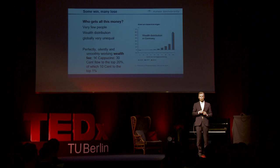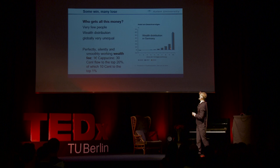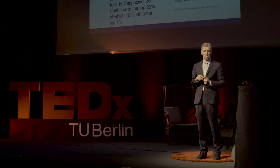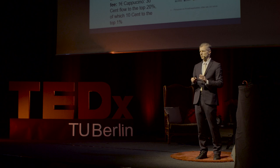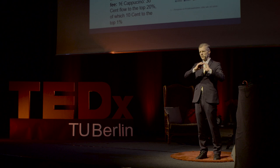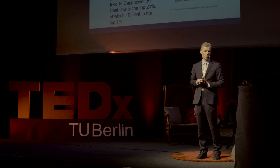Where does all this money go? Well, it's very simple: to the capital owners. Capital and wealth is distributed worldwide in a very unequal manner. In Germany, 10% of the population own about 60% of net wealth, and the top 1% own one third of net wealth. What we see in everyday transactions is a perfectly, silently and smoothly working wealth fee flowing from each individual to the capital owners. For example, if you buy a cappuccino for one euro, maybe 30 cents are capital costs, flowing to the top 20%, and 10 cents flow to the top 1%.